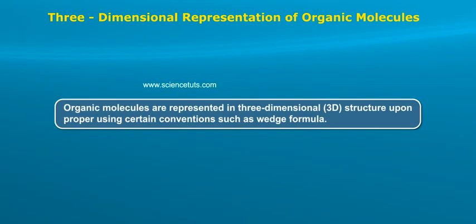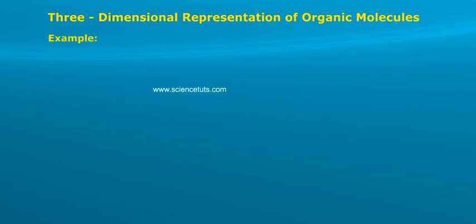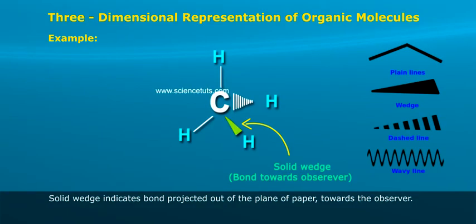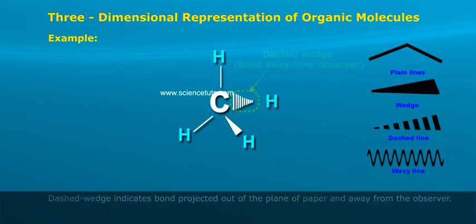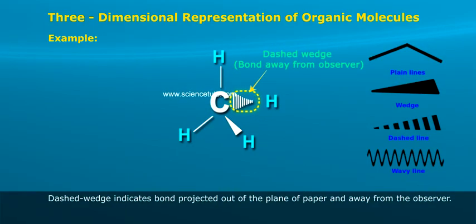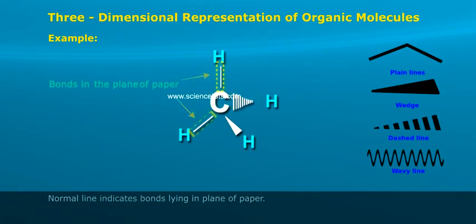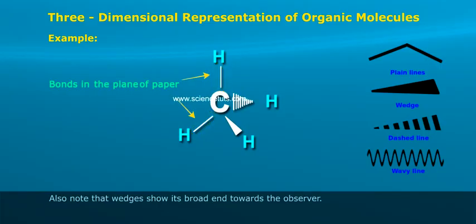Organic molecules are represented in three-dimensional 3D structure upon properly using certain conventions such as wedge formula. Example: solid wedge indicates bond projected out of the plane of paper towards the observer, dashed wedge indicates bond projected out of the plane of paper and away from the observer, normal line indicates bonds lying in plane of paper. Also note that wedges show its broad end towards the observer.